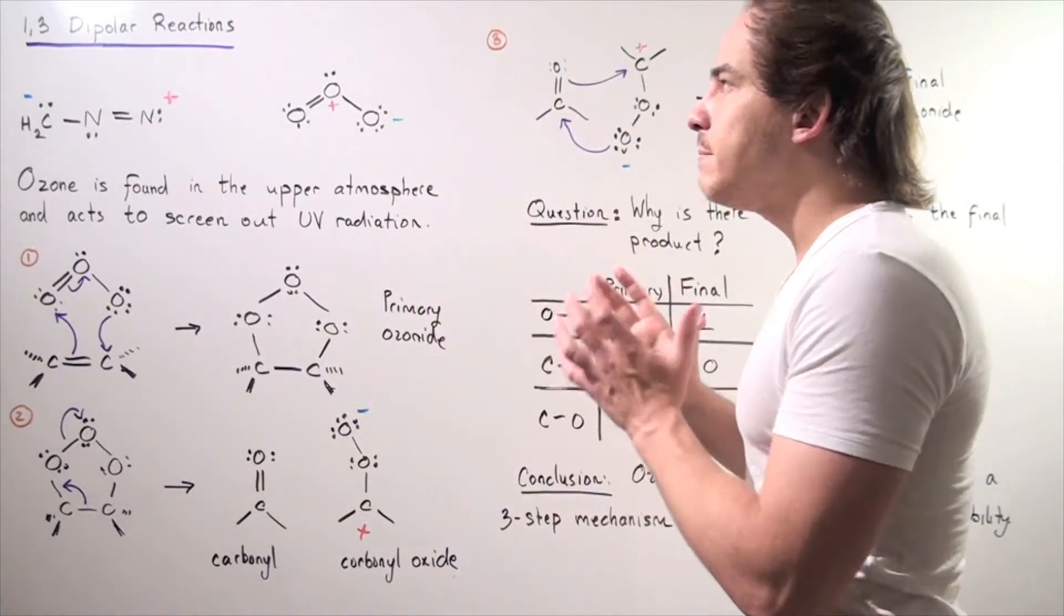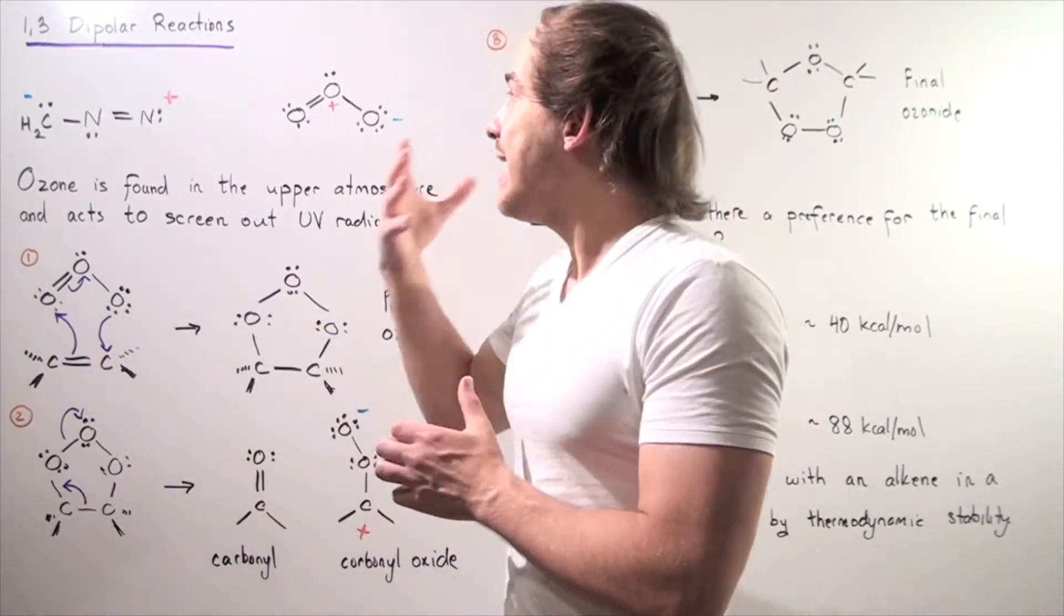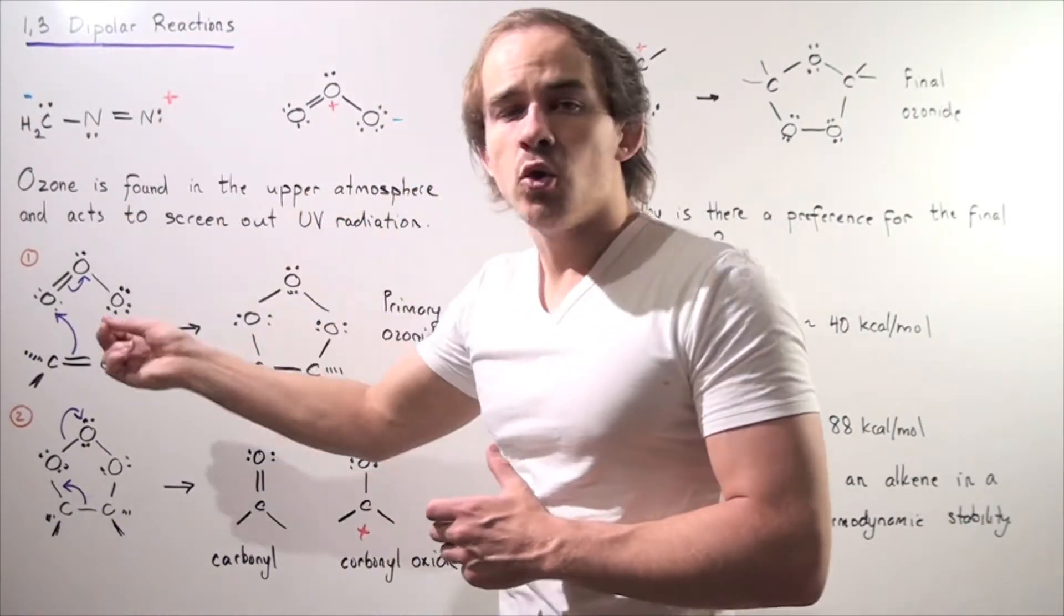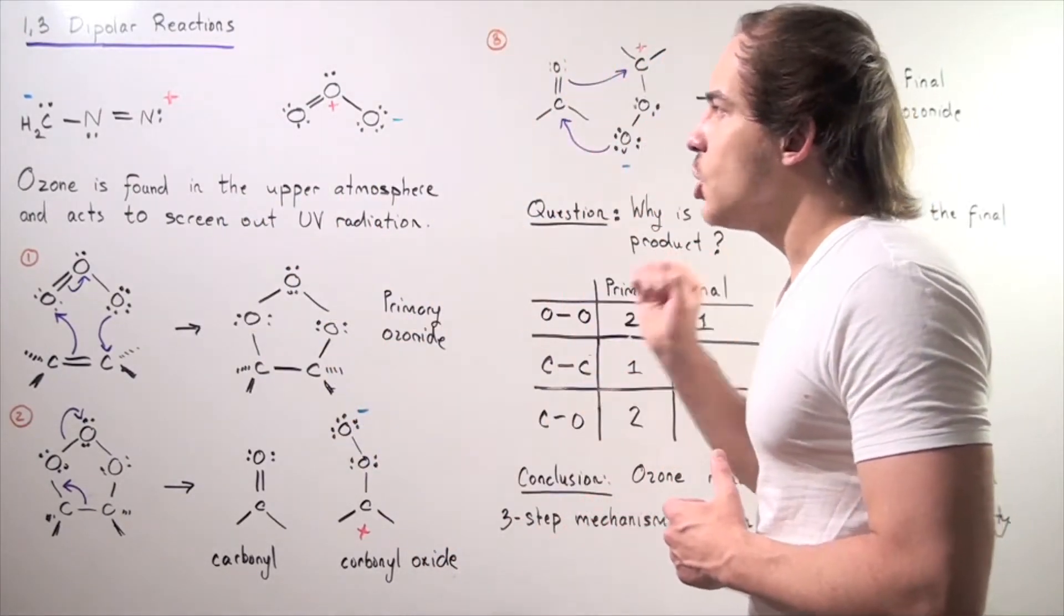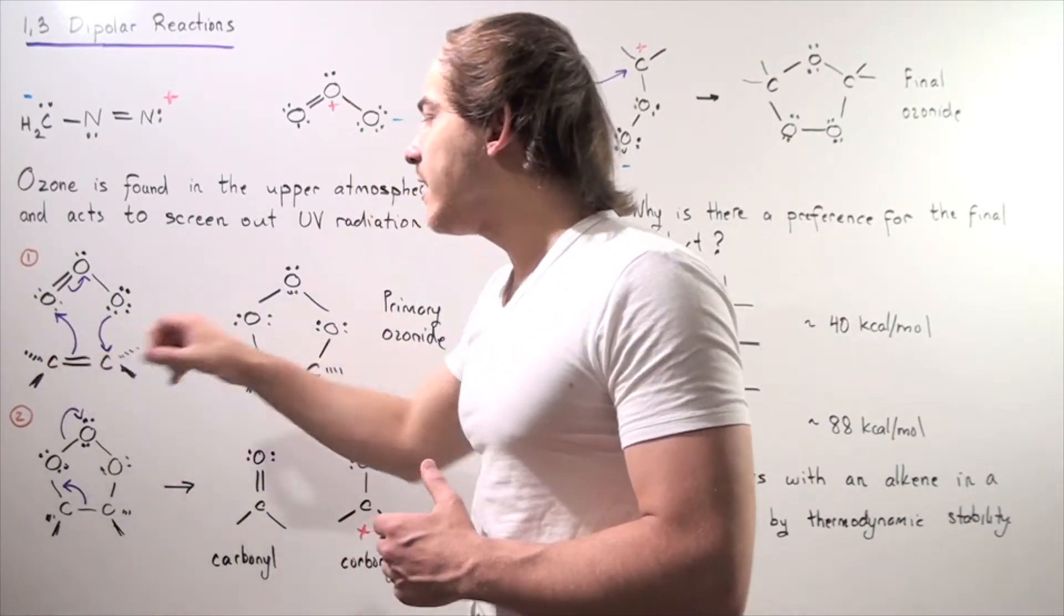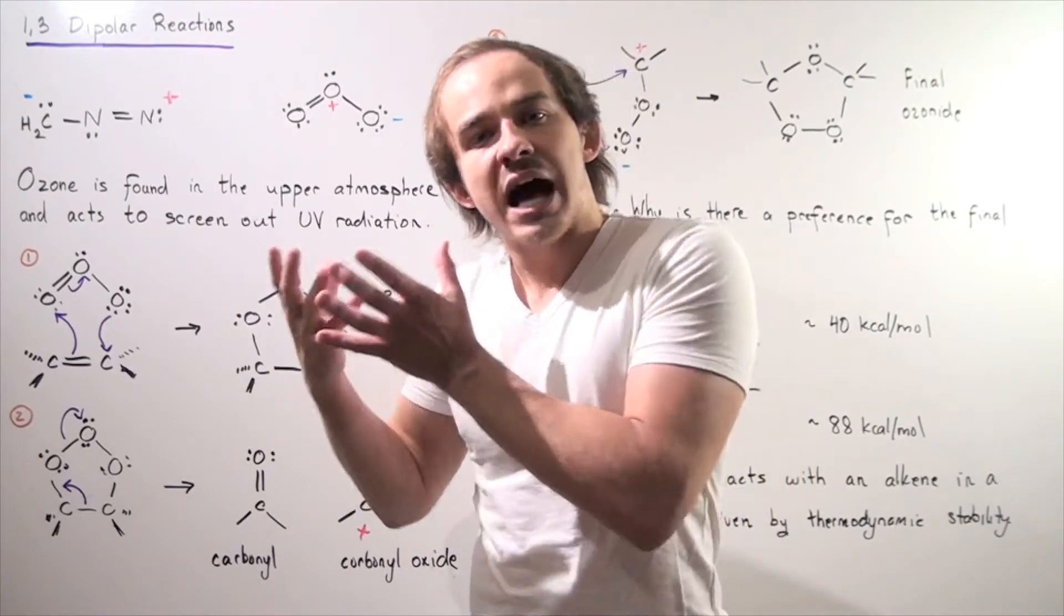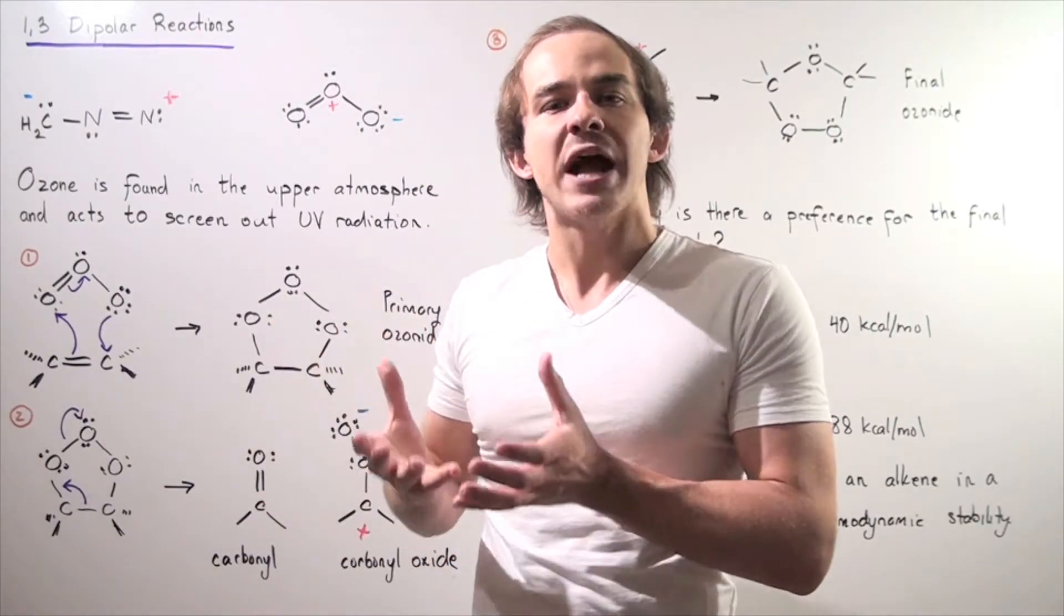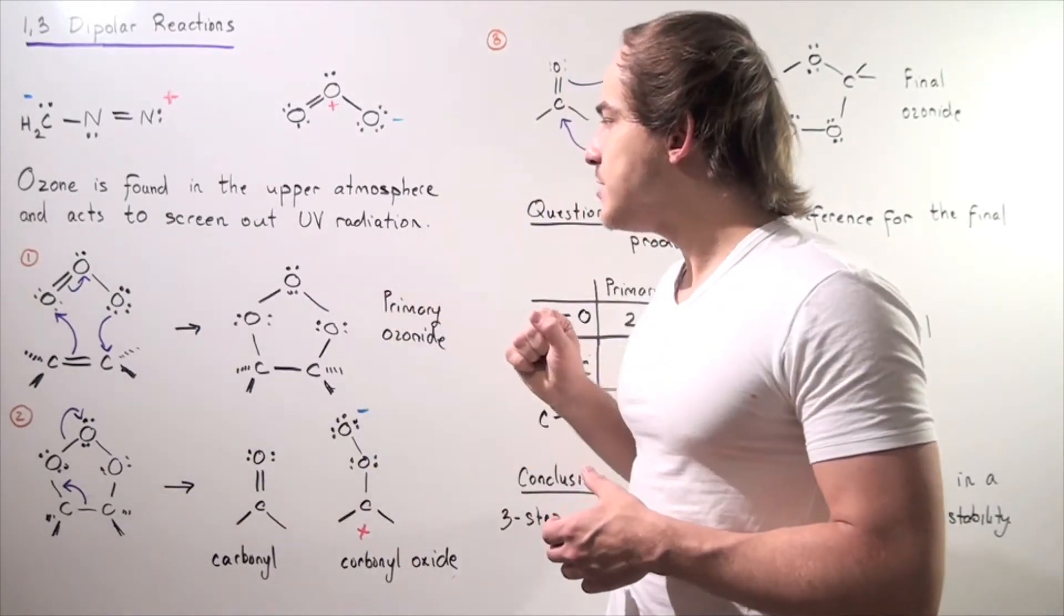So 1,3-dipole compounds can react with alkenes in a reaction known as 1,3-dipolar reaction. Let's look at a specific example with ozone. Let's combine ozone with an alkene. Recall that ozone is a molecule that predominantly is found in the upper atmosphere. What it does is it shields us from UV radiation.